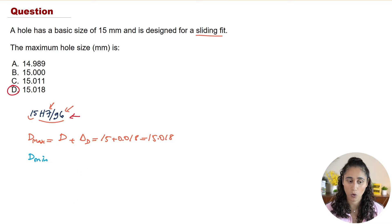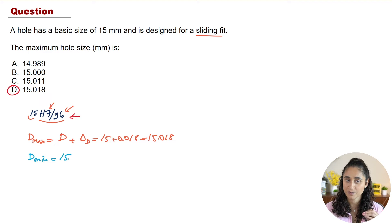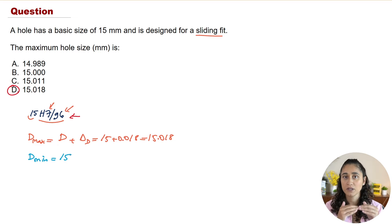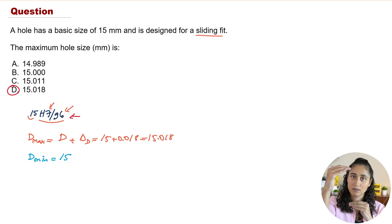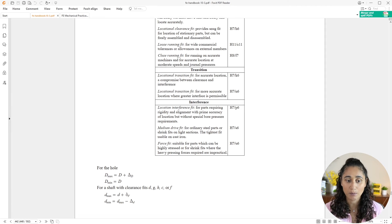For the minimum hole size, D_min is not equal to D minus the tolerance. In the hole basis system, the lower deviation is zero, so the smallest acceptable hole is simply 15. The maximum is the basic size plus the tolerance. This equation is in the reference handbook, but now you understand what it means.